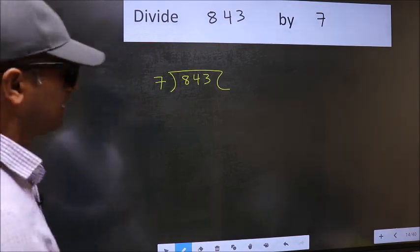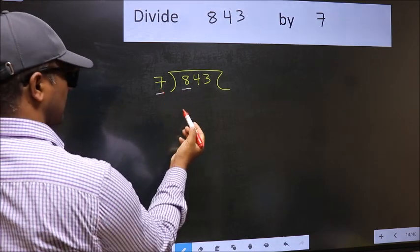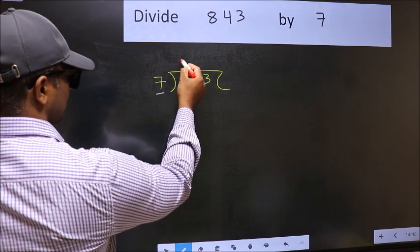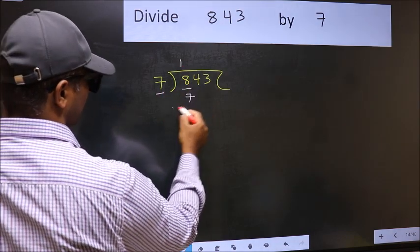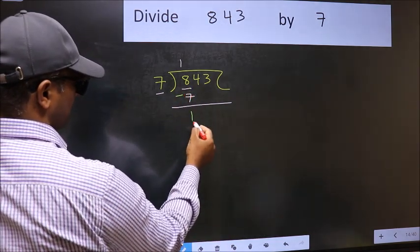Next. Here we have 8 and here 7. A number close to 8 in 7 table is 7 once 7. Now you should subtract. 8 minus 7, 1.